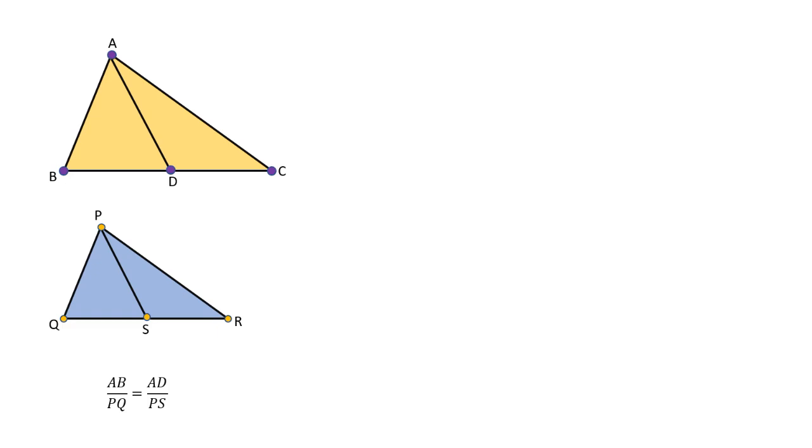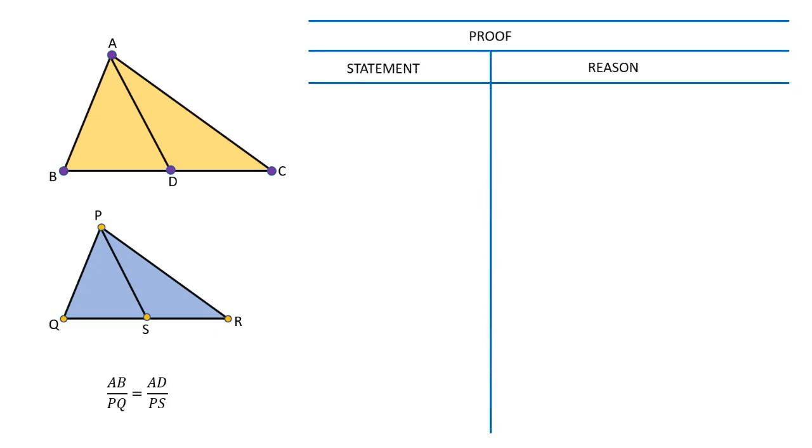Again, we will start a column-wise proof which is as follows. Triangle ABC is similar to triangle PQR because it is given. Also, half of BC is equal to BD, and half of QR is equal to QS.